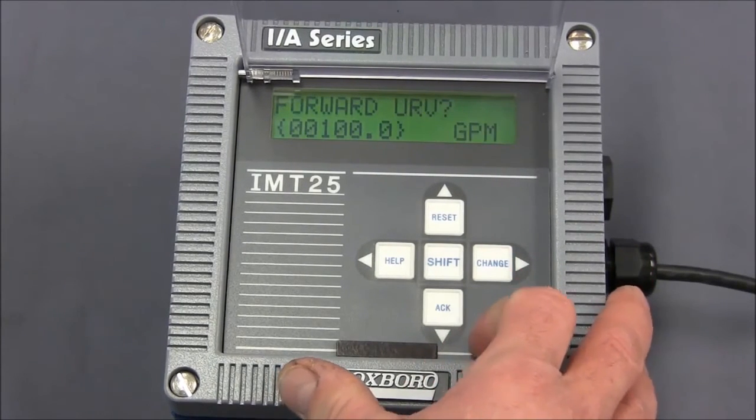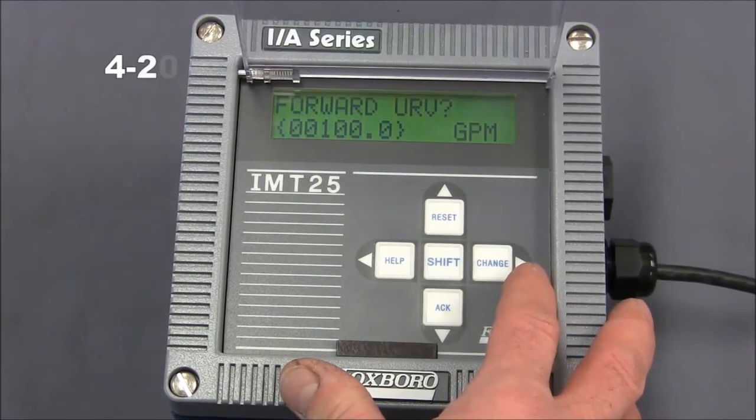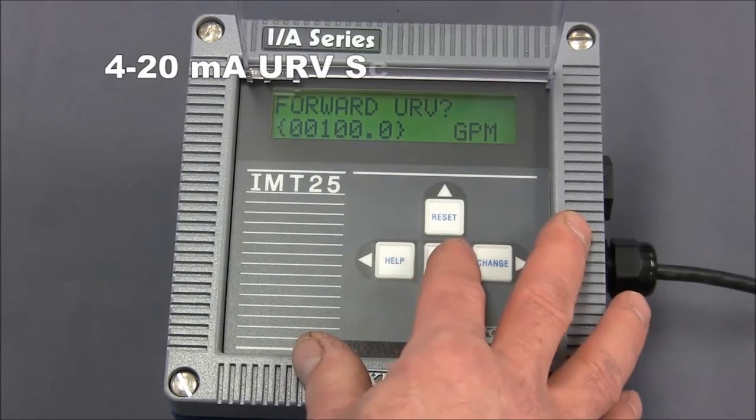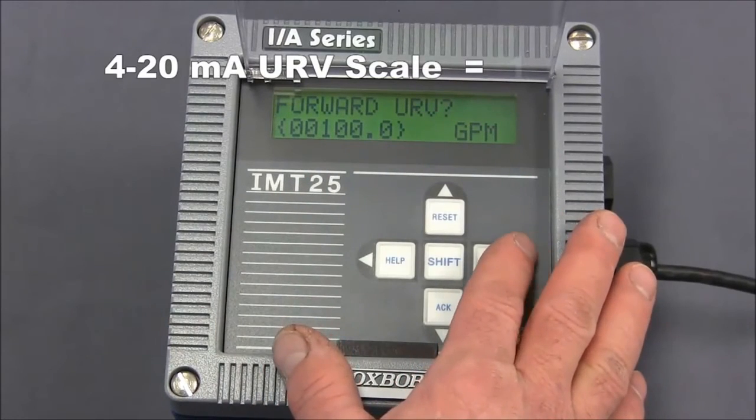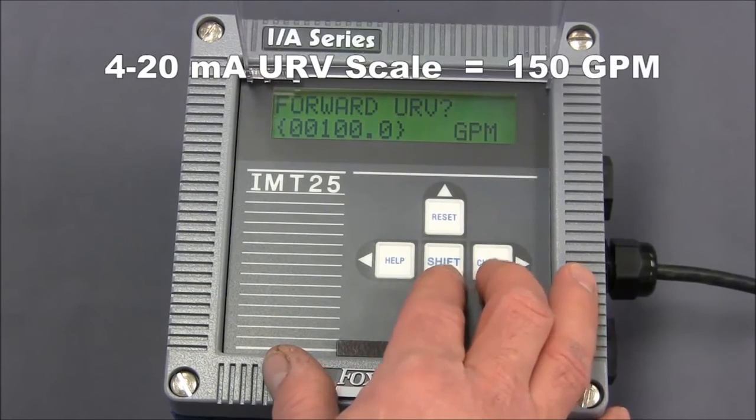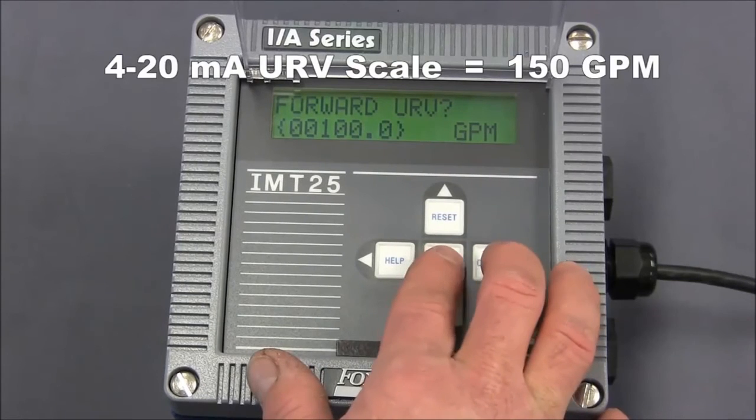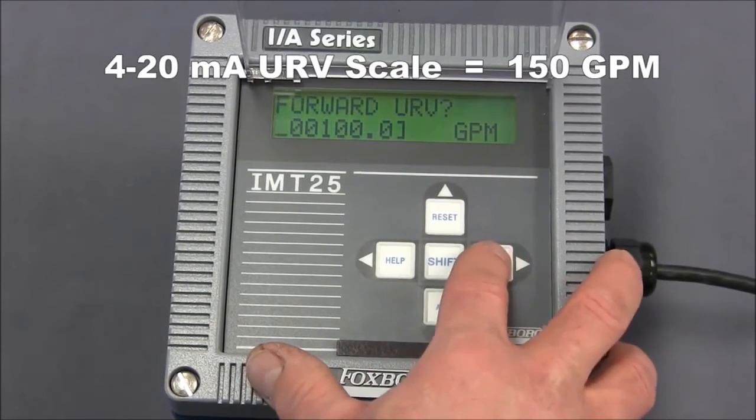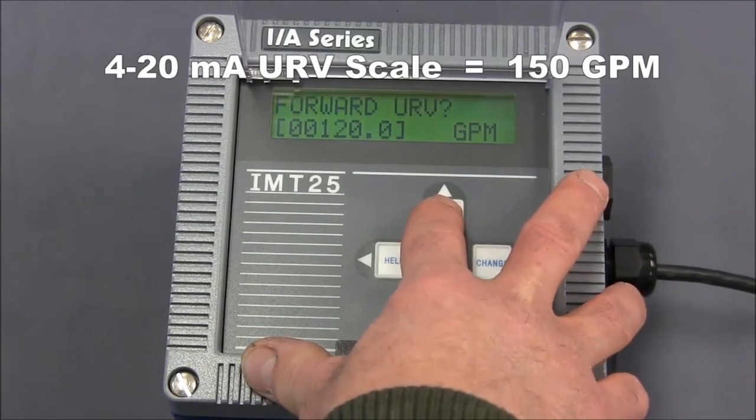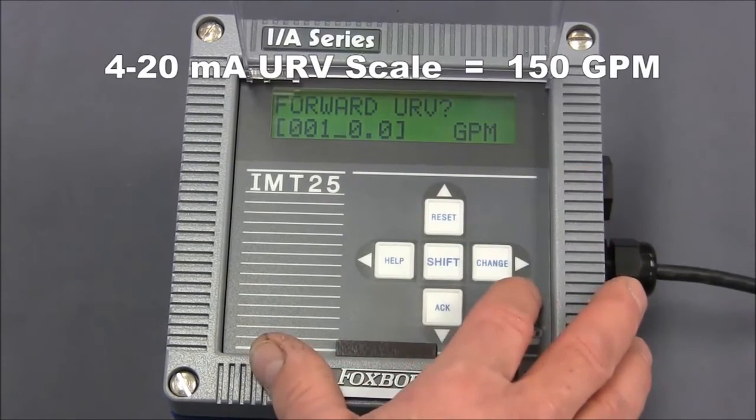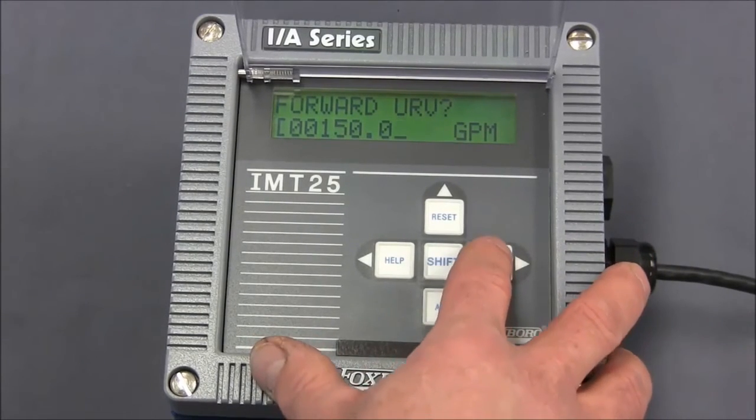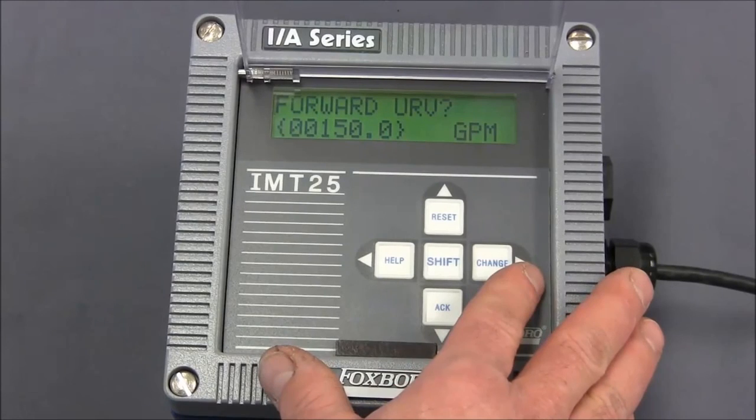Hit the right arrow again and here is our forward URV. This is our 4 to 20 milliamp scaling value. Four is always zero flow and whatever value here we enter is our 20 milliamp point. For this exercise we're going to change this to 150 gallons a minute. So we'll do shift and change, move along using the right arrow key to get to the tens position and we'll make that into a five. Go to the right and continue to the right until we get the right bracket flashing. We press the right arrow one more time and that locks this value in place.